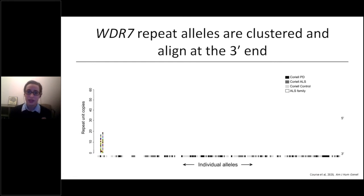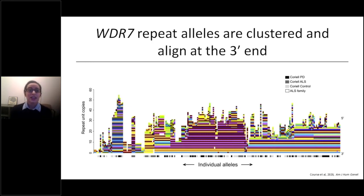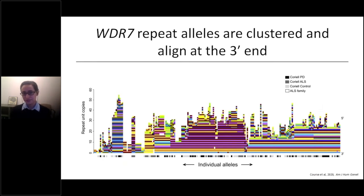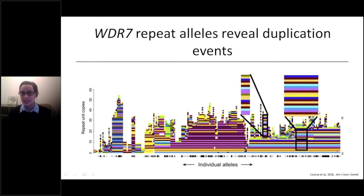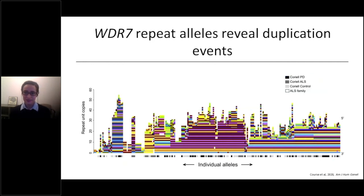Plotting all roughly 260 long-read-sequenced alleles, some patterns immediately emerge. First, alleles align far better to the three-prime end than the five-prime end, with more variability on the five-prime end, suggesting this repeat expands in the three-prime to five-prime direction. We also note clustering of different patterns, indicating some variation originated independently, like haplogroups. We also see instances of duplication events where stripes of color appear copy-and-pasted. Overall, there is a striking stripy-ness — you rarely see a block of all the same color or all the same internal nucleotide sequence.